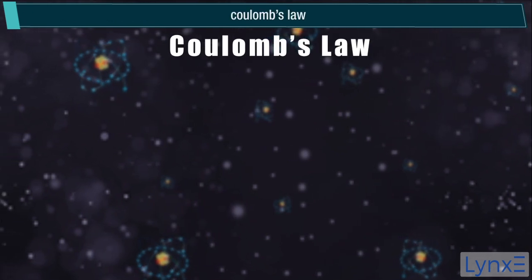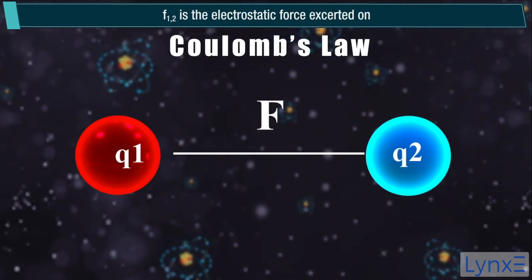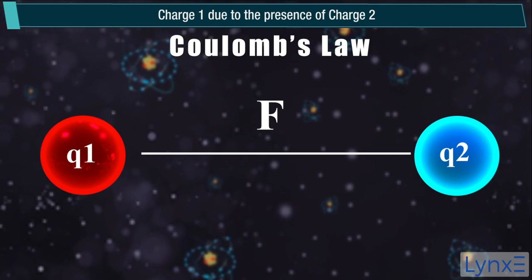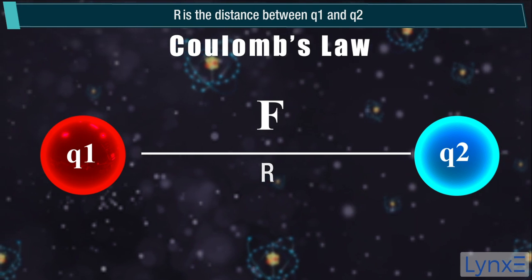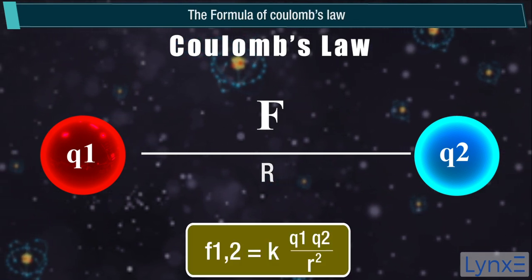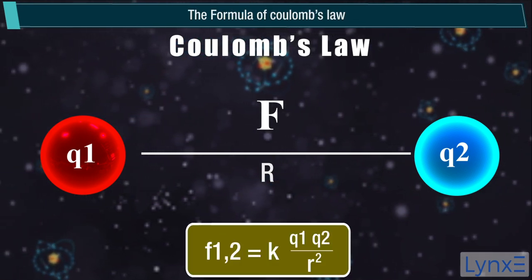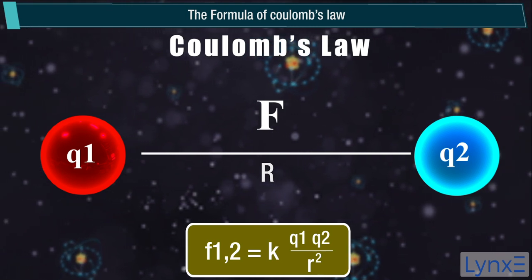Coulomb's law. F12 is the electrostatic force exerted on charge 1 due to the presence of charge 2. R is the distance between q1 and q2. The formula of Coulomb's law: F12 equals k q1 q2 upon R square.